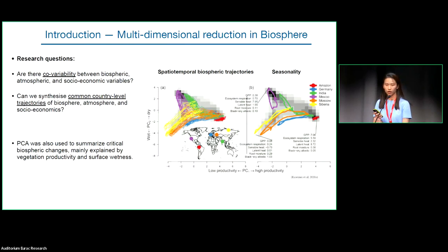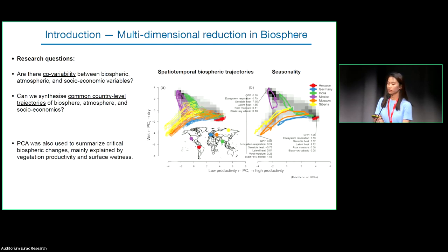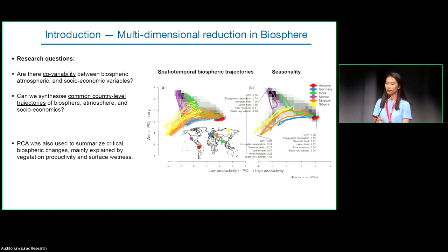Using similar methods but in the biosphere domain — from Kramer 2020 — their paper uses PCA methods to construct three main indicators representing the whole biospheric change. In the figure on the right side, there are two plots. Both plots use the first PCA dimension, which is vegetation productivity on the x-axis, and the second dimension, which is surface wetness — think surface soil moisture — on the y-axis. The left plot shows the spatial-temporal trajectory of critical biospheric change.